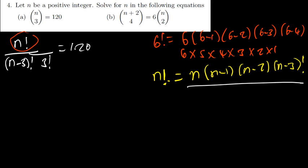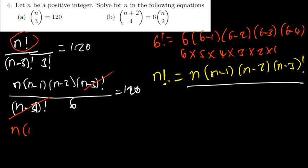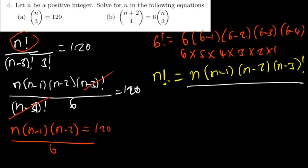So n factorial, I have to replace it with n open brackets, n minus 1, n minus 2, and then n minus 3 factorial, divided by n minus 3 factorial — that one is basically 6 — is equal to 120. N minus 3 factorial and n minus 3 factorial cancel. The only thing I've remained with now is n times (n minus 1) times (n minus 2), is equal to 120. On the denominator I have 6, so I want to cross multiply at this point.